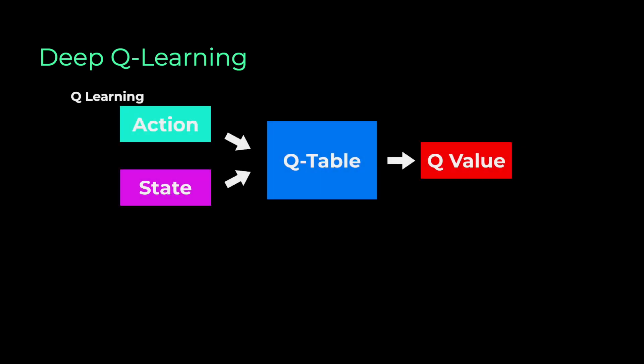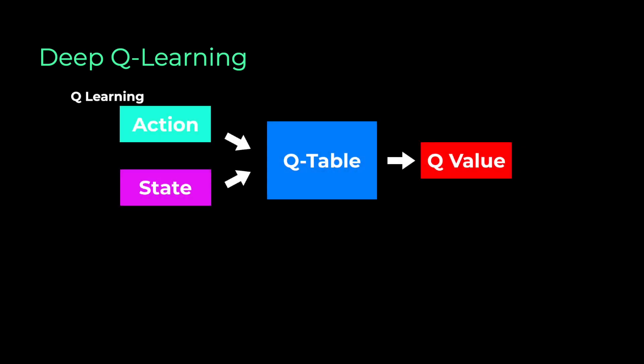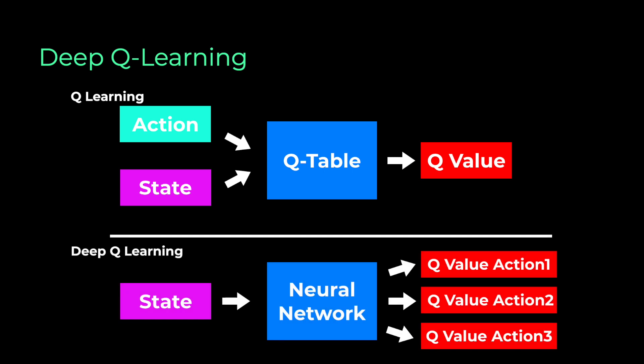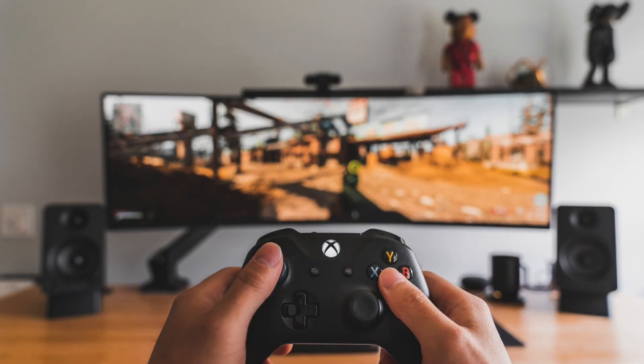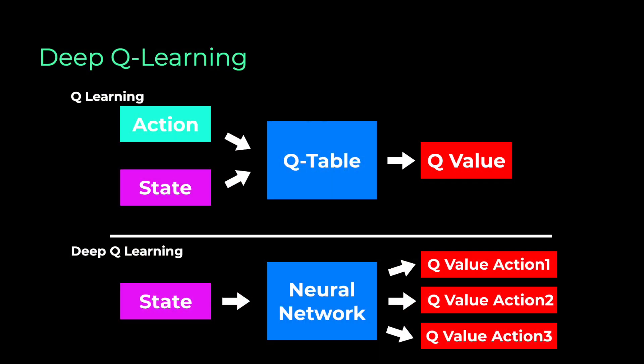Now deep Q learning takes the Q learning idea and takes it one step further. Instead of using a Q table, we use a neural network that takes a state and approximates the Q values for each action based on that state. And we do this because using a classic Q table is not very scalable. It might work for a simple game. But let's imagine a more complex game with dozens of possible actions and game states, then the Q table will soon get far too complex and cannot be solved efficiently anymore.